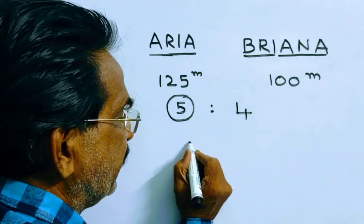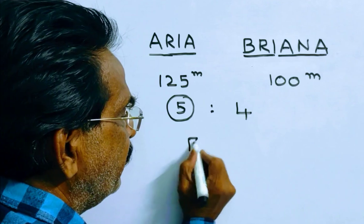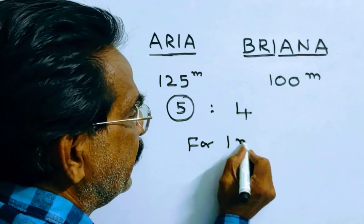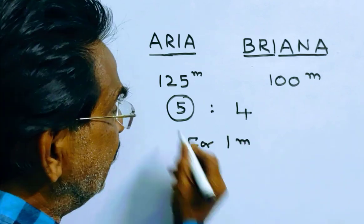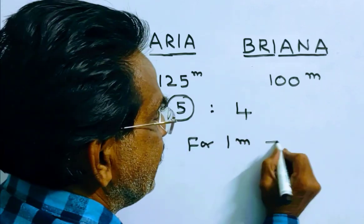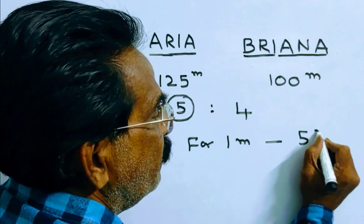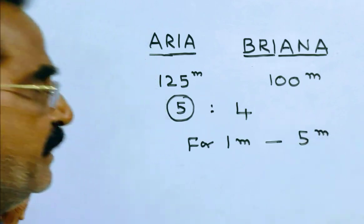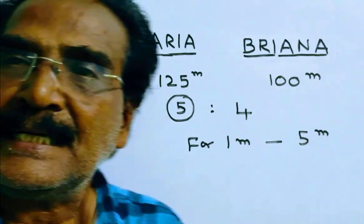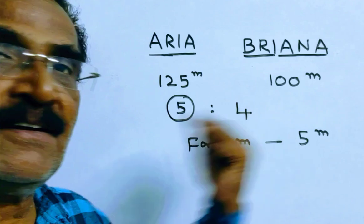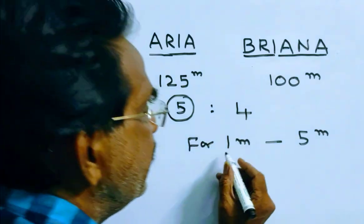So for a 1 meter lead, the length of the race is 5 meters.